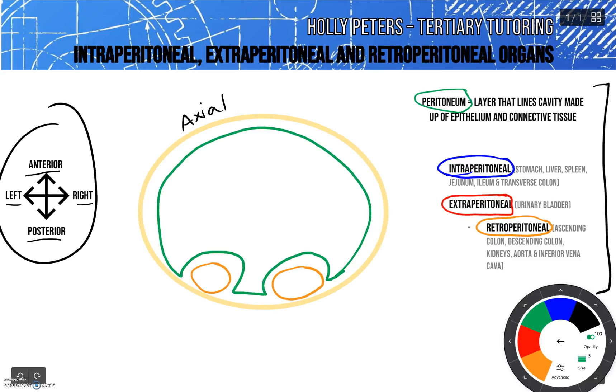You can see how they're encapsulated within the peritoneum but pressed up against the posterior wall. This makes them immobile and it includes other organs like the ascending and descending colon, kidneys, aorta and inferior vena cava.